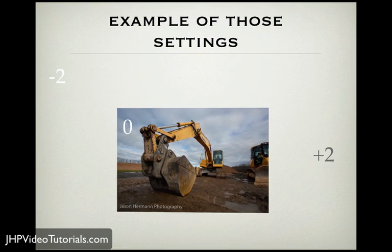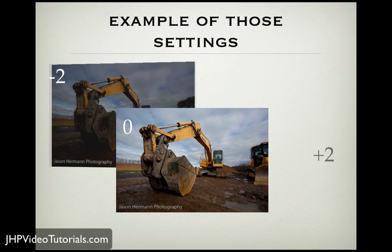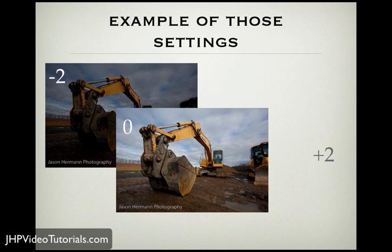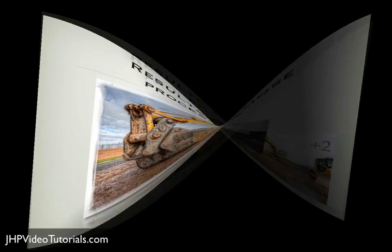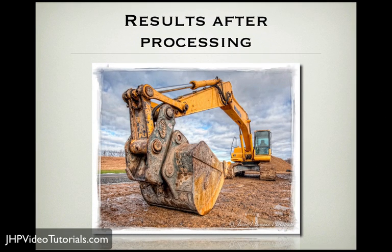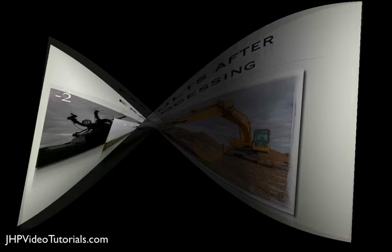Here's a couple examples. That's the zero exposure, that's negative 2, and that's plus 2 — those are the three exposures. And the result is this: when you combine those three exposures and process them with the Photomatix software or other HDR processing software, it takes all the information from all three exposures and blends them together. You can work it and get a really cool result.